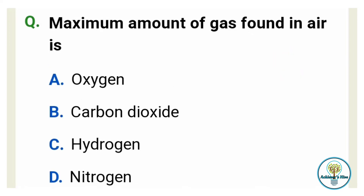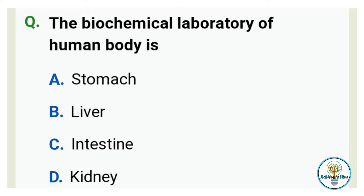Maximum amount of gas found in air is? That is very simple — you all must have guessed it. Option A: Oxygen. Option B: Carbon dioxide. Option C: Hydrogen. And option D: Nitrogen. And the correct answer is option D, Nitrogen.